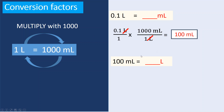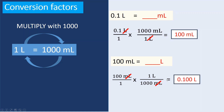Let's try another example: 100 milliliters equals how many liters? Set up the dimensional analysis — 100 milliliters, with 1 liter equal to 1000 milliliters. Milliliters cancel out, then multiply 100 times 1, which gives you 100 over 1000, equaling 0.1 liters.